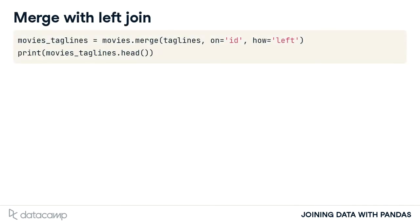To merge these two tables with the left join, we use our merge method similar to what we've learned in Chapter 1. Here, we list the Movies table first and merge it to the Taglines table on the ID column in both tables. Notice an additional argument named How — this argument defines how to merge the two tables. In this case, we use Left for a left join. The default value for How is Inner, so we didn't need to specify this in Chapter 1, since we were only working with inner joins.